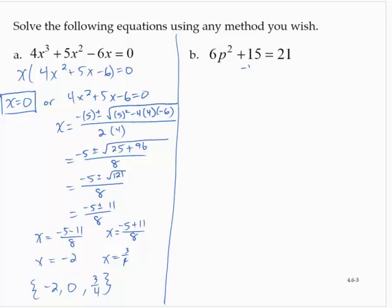I'll subtract this 15 from both sides. So then 6p² = 6. Dividing through by 6, p² = 1. Applying the square root property, p is the positive or negative square root of 1. So p = -1, or p = 1.